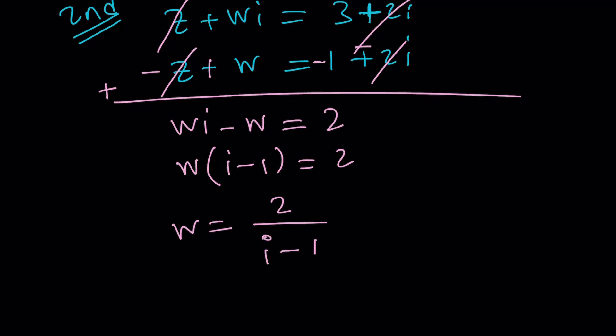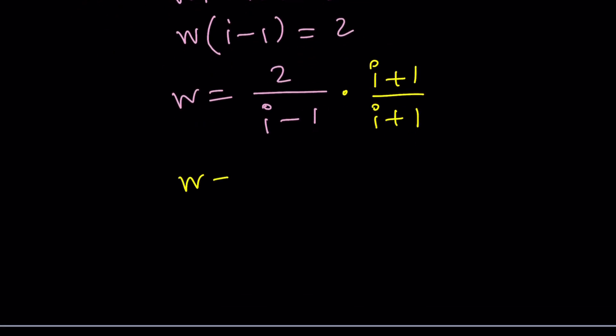Take out Wi minus 1 equals 2. And then W is equal to 2 over i minus 1. What do you think the conjugate for i minus 1 is? Is it i plus 1? No. It's actually negative 1 minus i, but who cares, right?